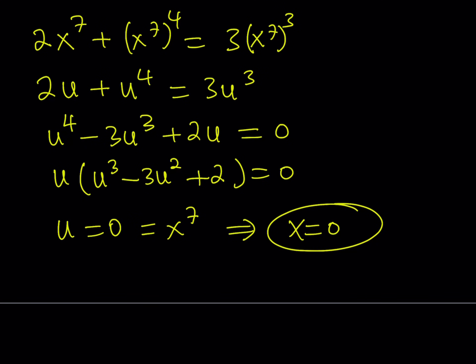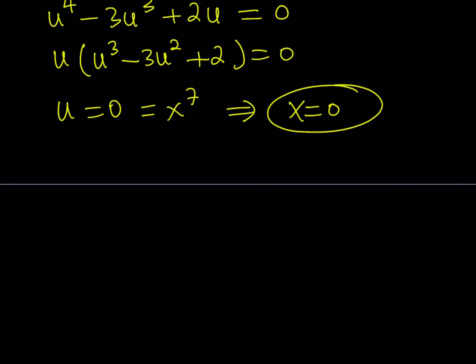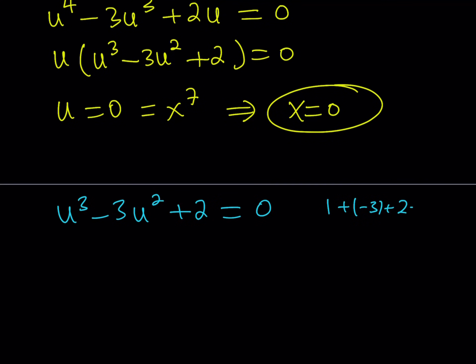So x equals 0 is a trivial solution. Now what can we do with the other solutions? We have u cubed minus 3u squared plus 2 equals 0. One of the things I've mentioned in other videos is that when you get a polynomial equation, you should always check the sum of the coefficients. Here, 1 plus negative 3 plus 2 equals 0. So the sum of the coefficients is 0, which means u equals 1 is a solution. That means x to the 7th power equals 1, and from here we get x equals 1 — an obvious real solution.